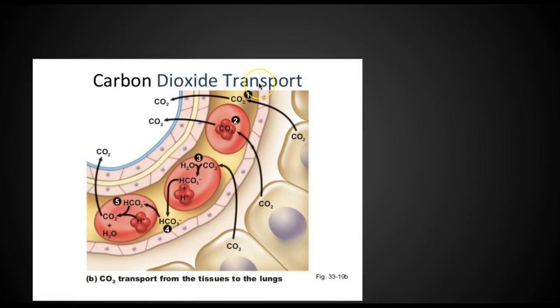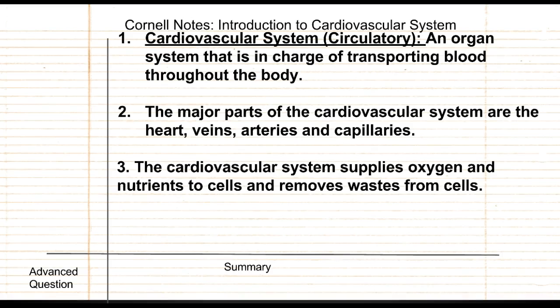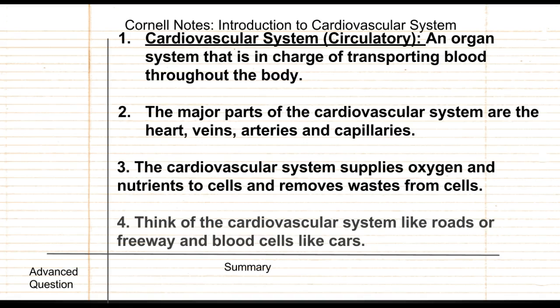Okay, go ahead and come up with your question for three, and then we'll move on to the last idea for today. Are you ready? Let's move on to four. Think of the cardiovascular system like a road or a freeway, and blood cells are like the cars that travel throughout the system and get to every single one of your cells. Go ahead and write that and then move on to the question.